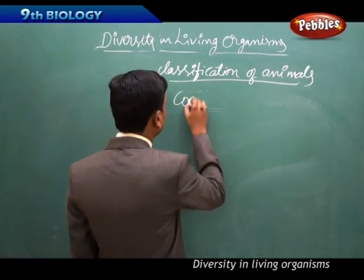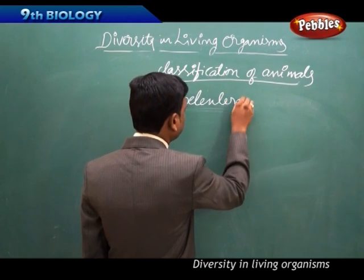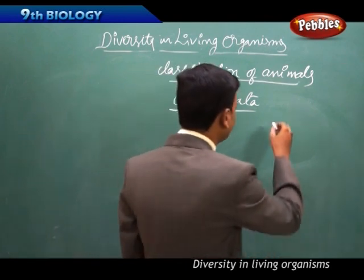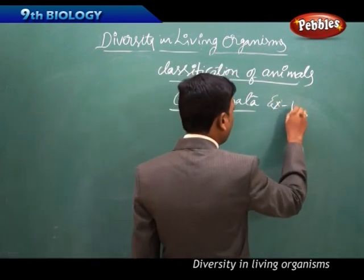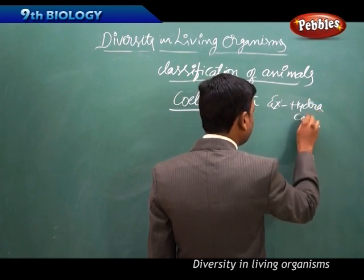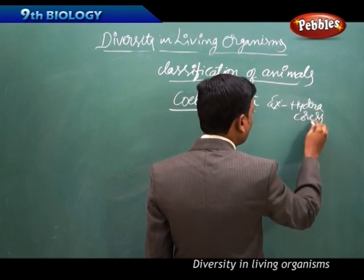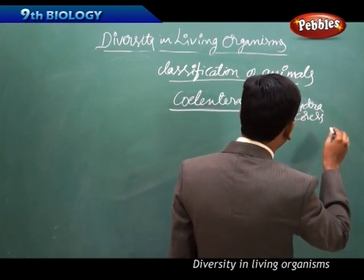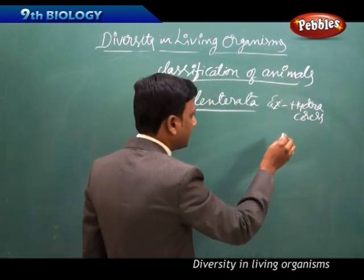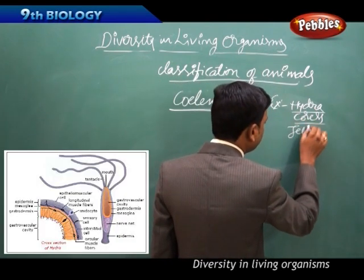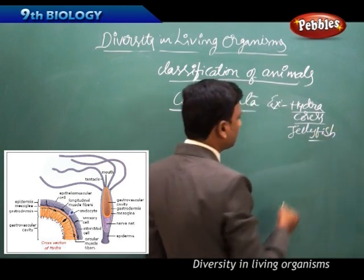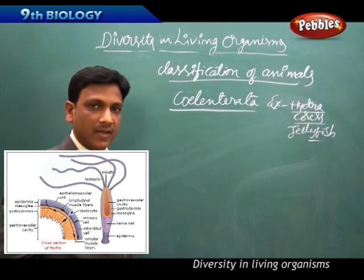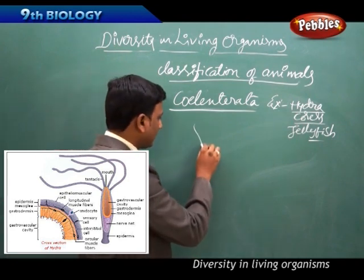The next phylum is Coelenterata, the second phylum in the animal kingdom. Examples of Coelenterata are hydra, corals, and jellyfish.